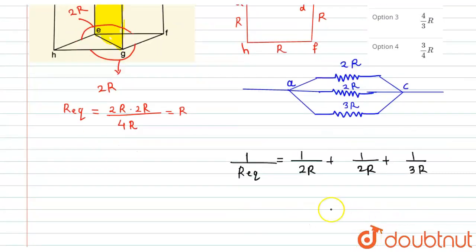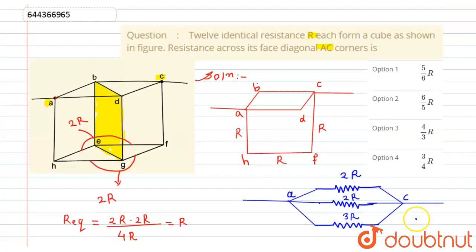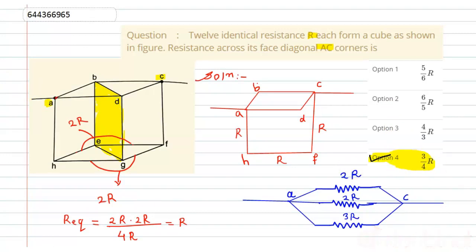Taking common denominator: 1/R_eq = 3/(6r) + 3/(6r) + 2/(6r) = 8/(6r), so R_eq = 6r/8 = 3r/4. The required equivalent resistance between the face diagonal corners A and C is 3r/4. This corresponds to option 4, which is the correct answer.